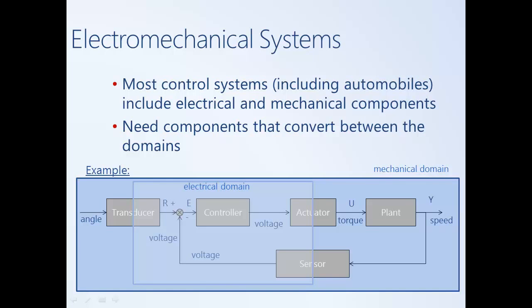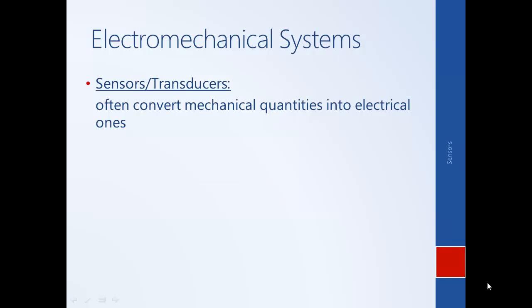For this particular example, where the controller is implemented in software and we're trying to control a mechanical system, we need three electromechanical quantities: a transducer, a sensor, and an actuator. In this module we will discuss sensors and transducers, and in a later module we will discuss electromechanical actuators. We'll now go ahead and list a few examples of sensors and transducers that are electromechanical.